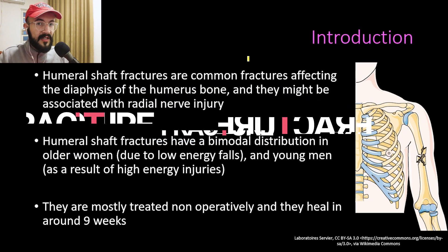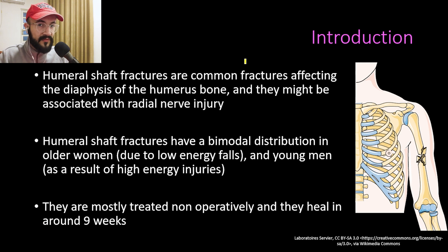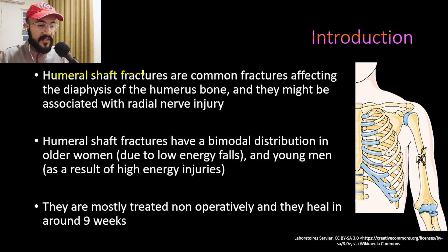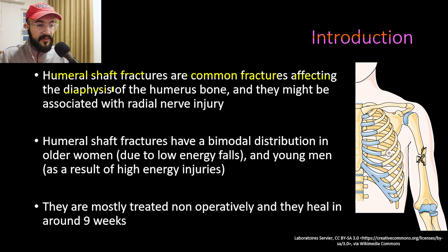In our talk about humeral shaft fractures, we will start with an introduction. Humeral shaft fractures are common fractures; they account for up to five percent of all fractures in adult patients and they affect the diaphysis of the humerus bone, as you can see in this picture. They might be associated with radial nerve injury.